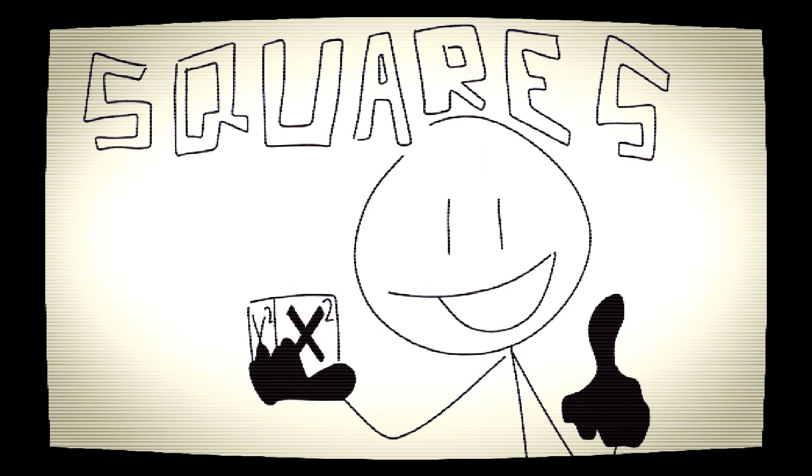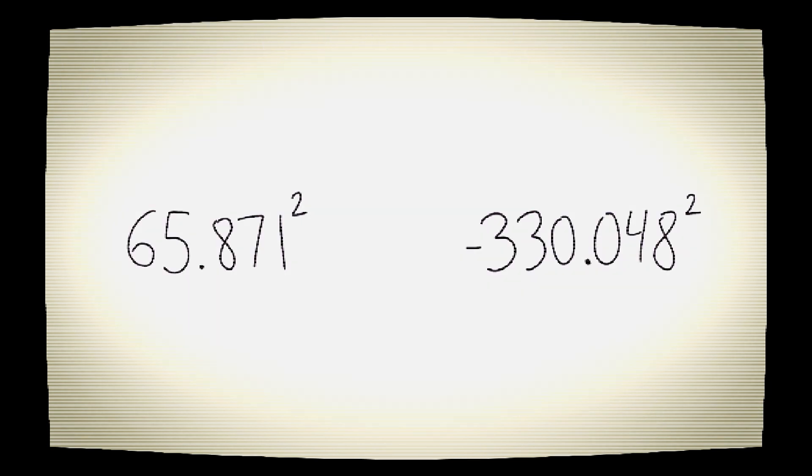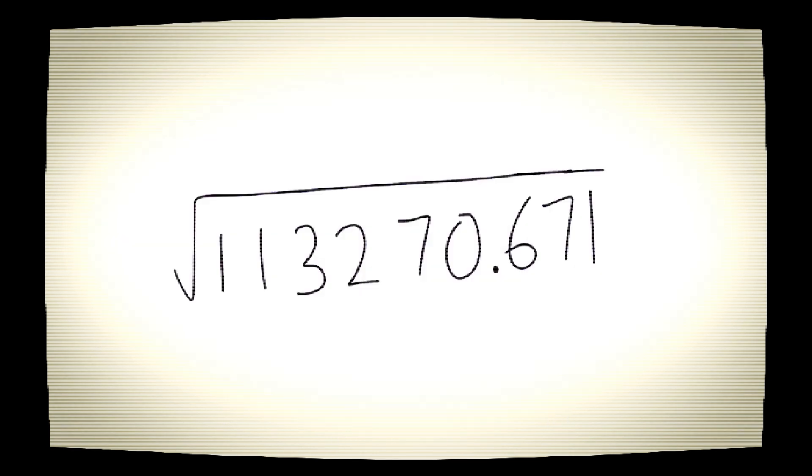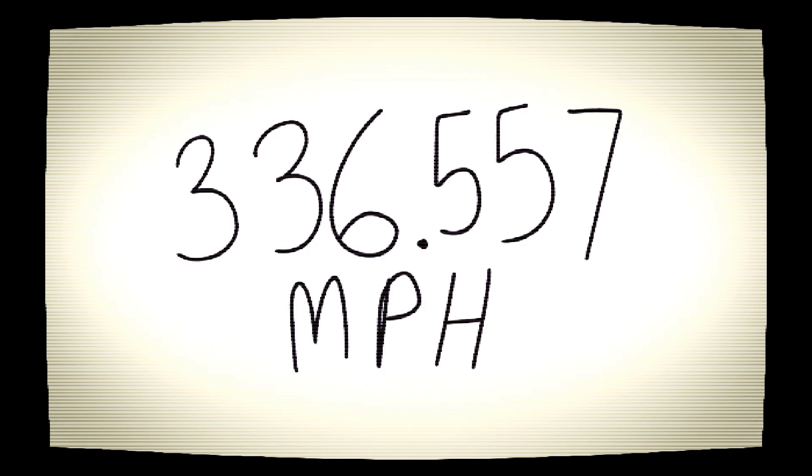However, with my patented squares, we can. Simply square both values of the ground speed vector, add these, and then we take the root of the result. There you have it. The ground speed clocks in at 336.557 miles per hour.